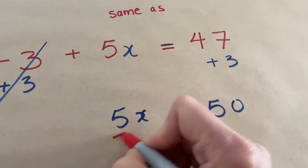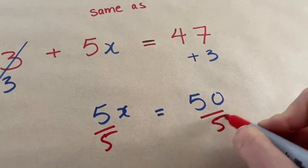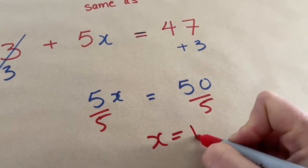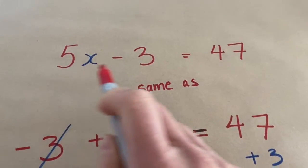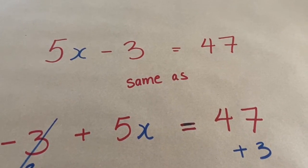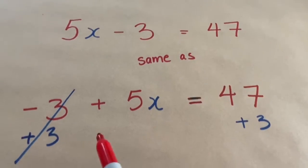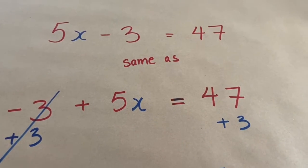I'm going to divide both sides by 5, and I get x is equal to 10. I just did this example because I want to show you that it doesn't matter whether you write the equation like this, as we did yesterday, or like this. It's the exact same steps.